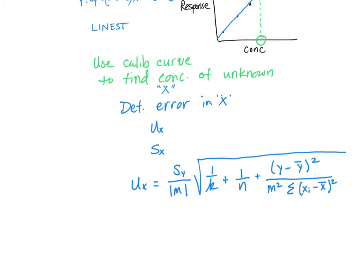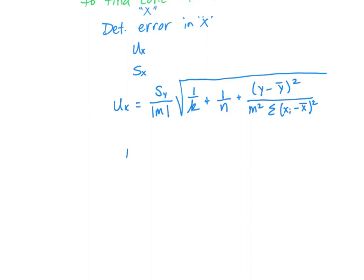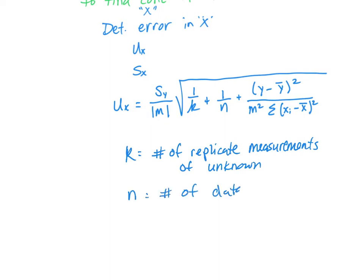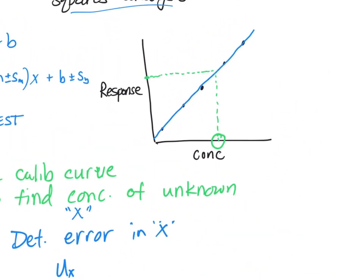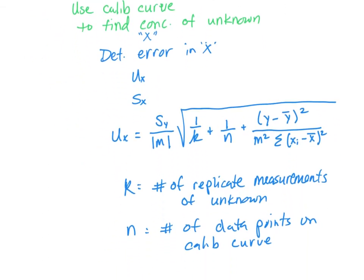And in this equation, k is equal to the number of replicate measurements of the unknown. n is the number of data points on the calibration curve. So for instance, in this plot here, if each one of these black circles represents a data point—1, 2, 3, 4, 5—we have 5 data points, so n would be 5.